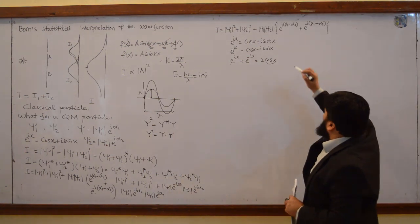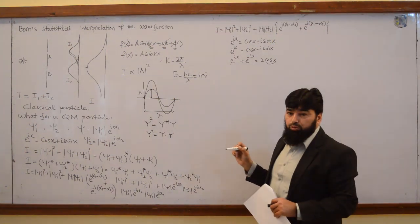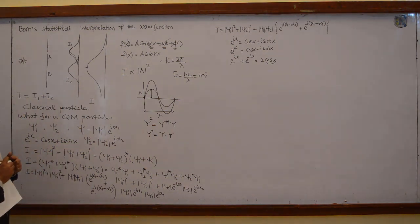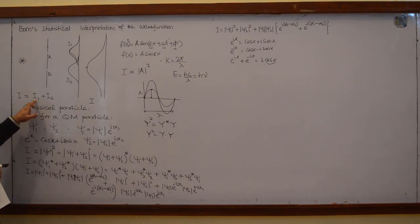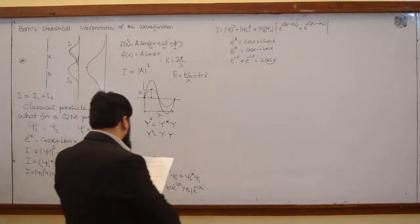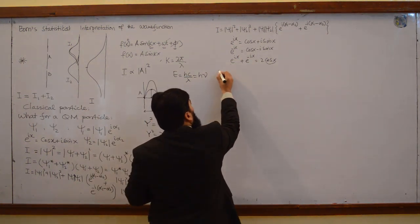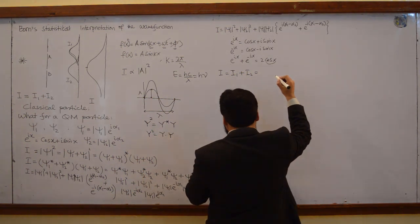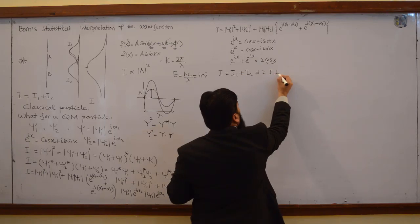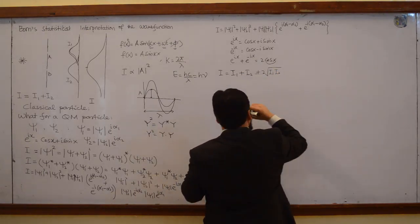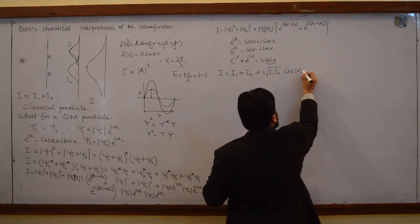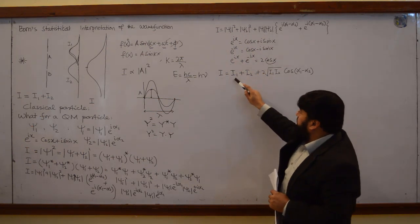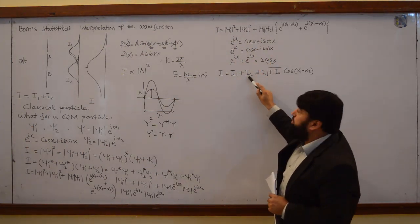So from here I can write the psi 1 and psi 2 mod terms. The total intensity is equal to i₁ plus i₂, and this one is plus 2 times square root of i₁ i₂, and cos of alpha 1 minus alpha 2. Now |ψ₁|² is i₁ and |ψ₂|² is i₂.